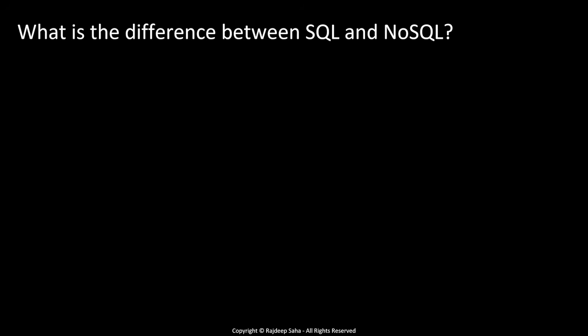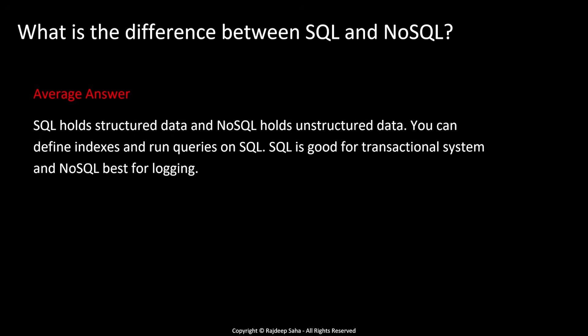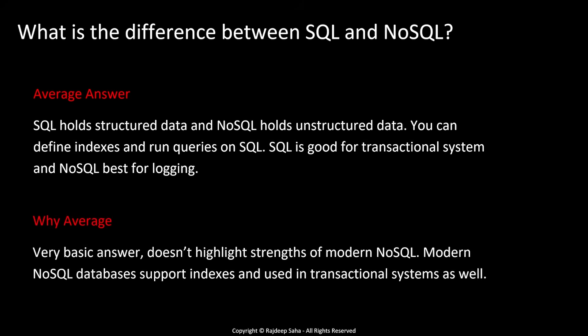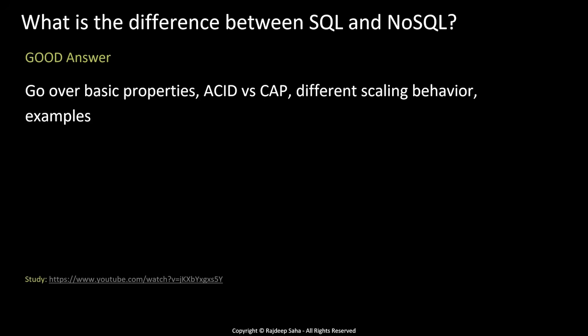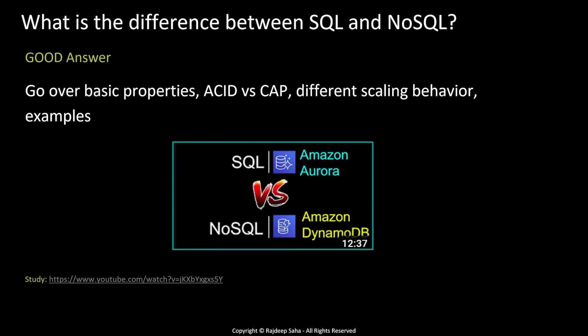The next question is also super common: what is the difference between SQL and NoSQL? The average answer is: SQL holds structured data and NoSQL holds unstructured data; you can define indexes and run queries on SQL; SQL is good for transactional systems and NoSQL is best for logging. Why is this average? It's a very basic answer and doesn't highlight the strengths of modern NoSQL. Modern NoSQL databases support indexes and are also used in transactional systems. A good answer will go over basic properties as well as ACID versus CAP, different scaling behavior, along with examples.